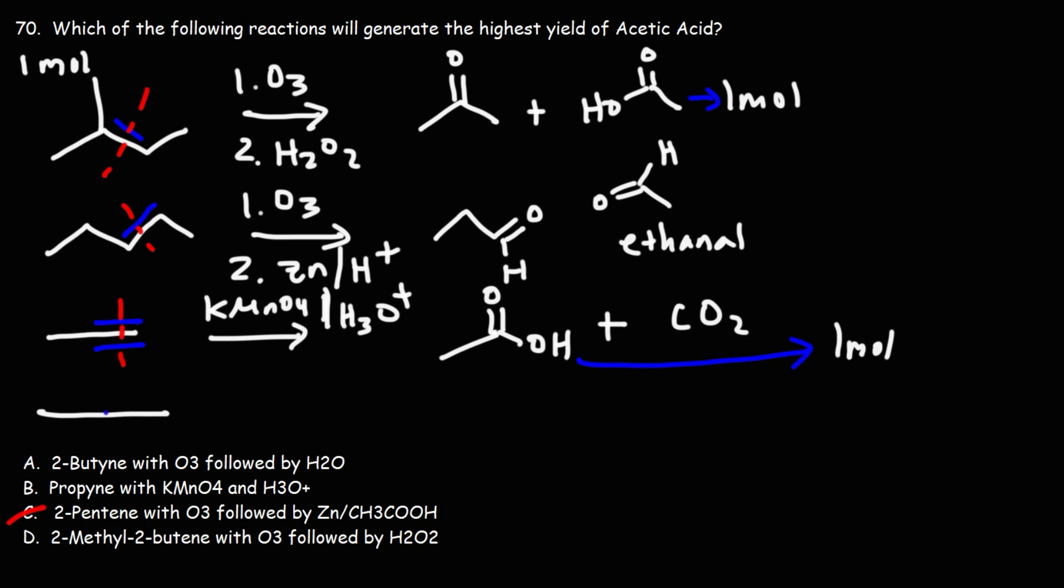Now moving on to answer choice A, we have 2-butyne and we're going to react it with ozone followed by water. Notice that this is water and not hydrogen peroxide. So this is a mild oxidizing agent, but we're not starting with an alkene, we're starting with an alkyne. When you react ozone with an alkyne, you're going to get a carboxylic acid.